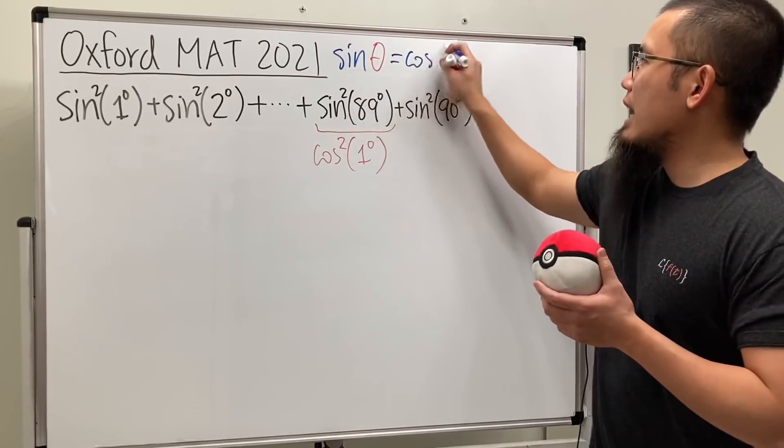So the identity that we're using is this: when we have sine of an angle, this right here is equal to cosine of the complementary angle, so that's 90 degrees minus theta. So as long as this and that add up to 90, then sine and cosine are equal, and that's the idea.